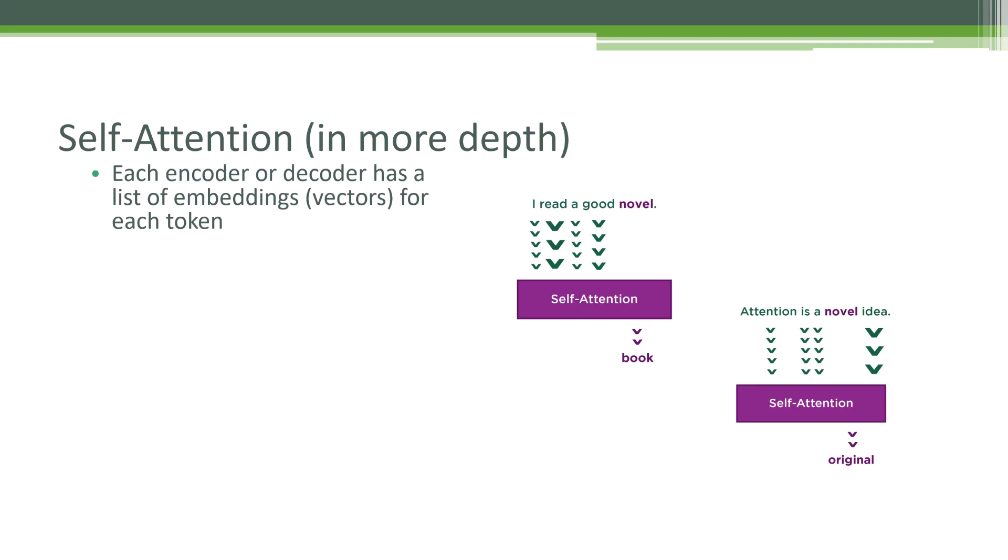Let's take a couple of examples here. Let's say that we have the phrase 'I read a good novel.' Now in this case, the word novel refers to a book, but novel can be read a different way. So 'attention is a novel idea' is another example here, where novel refers to the concept of something that's new or original. Same token, two different meanings.